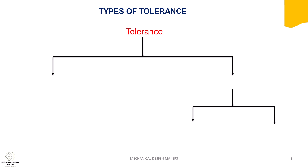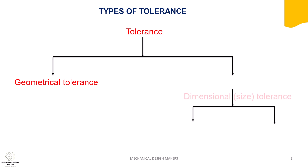Tolerance is classified into two types: one is geometrical tolerance, and another one is dimensional or size tolerance. This dimensional tolerance is again classified into two types.